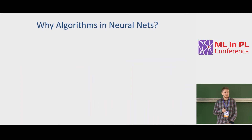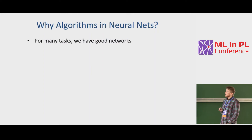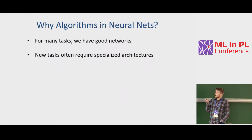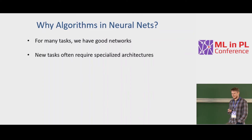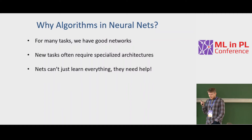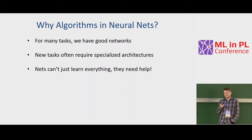Why do we want to put algorithms inside neural networks? First, for many tasks we do have good networks that actually work. But the architectures that work well are often built on decades of research, and it's very hard to build new architectures for new tasks. If you have a new task, you can take a favorite existing architecture, but there are no guarantees it will work. At the same time, neural networks cannot just learn everything — they often need help through smart architecture engineering or strong supervision.